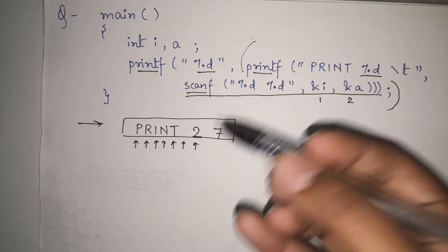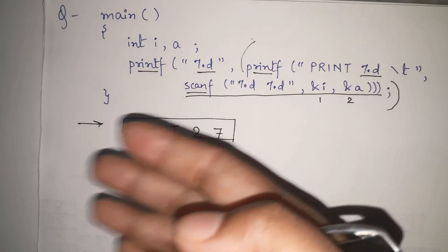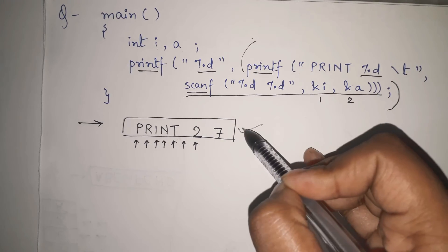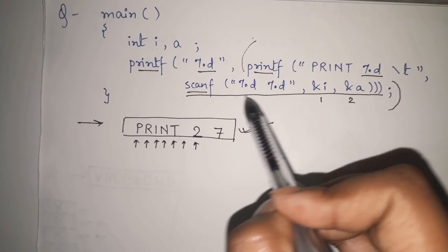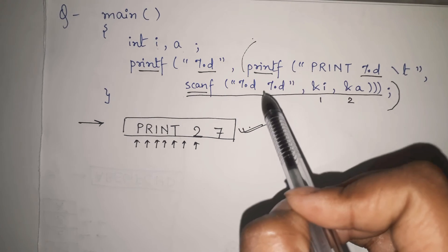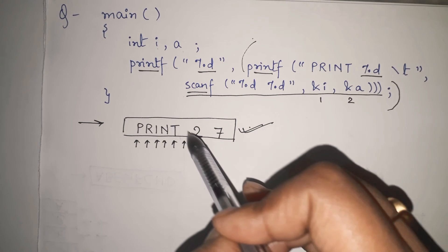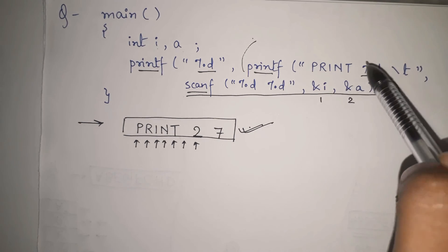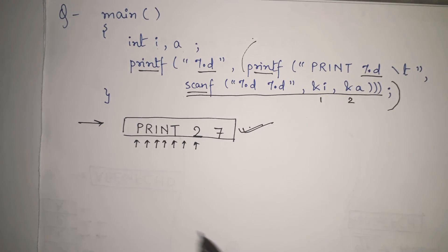Many students will say this gives an error — that you cannot write printf inside printf or scanf inside printf — calling it a compilation error or warning. But no, it executes properly and gives the output 'printf 2 7'. To summarize: printf with scanf inside prints the count of characters/integers scanned by that scanf; and an outer printf counts all characters already printed inside it and prints that number.